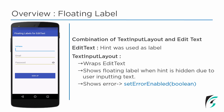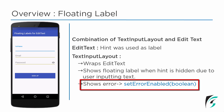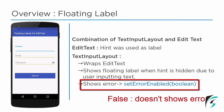The text input layout also provides us with the default feature of field validation. We don't need any third-party library for the display of the error. We have the default attribute setErrorEnabled provided with the text input layout. When it is set to true, the error will be displayed and the validation will be carried out. When it is set to false, there will be no input validation.